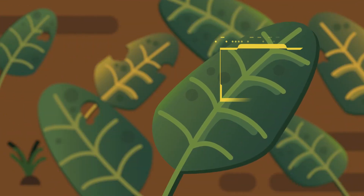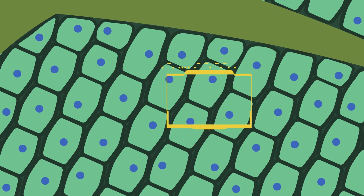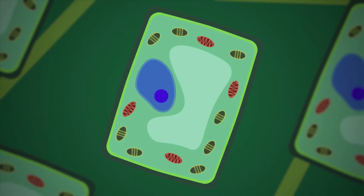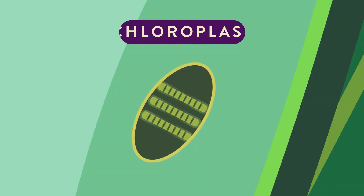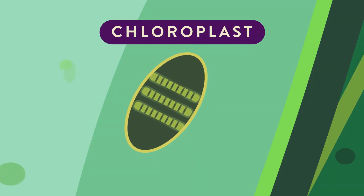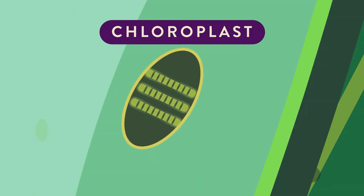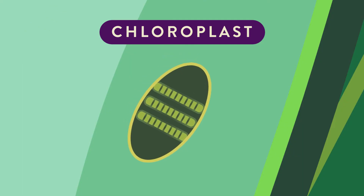Examine the plant. Enhance. Enhance. Enhance. Now we discover the cell. Enhance once more, and we uncover the chloroplast. This is the machine used for photosynthesis.